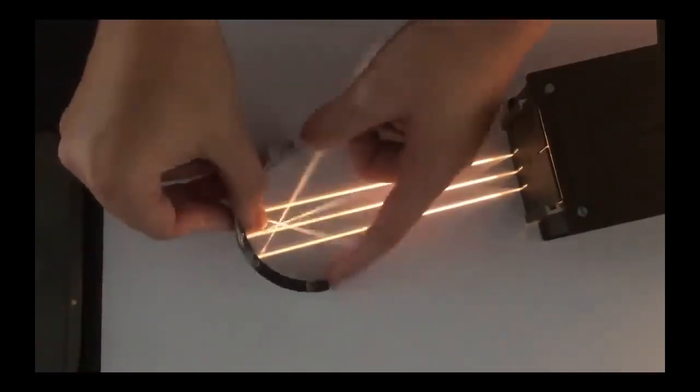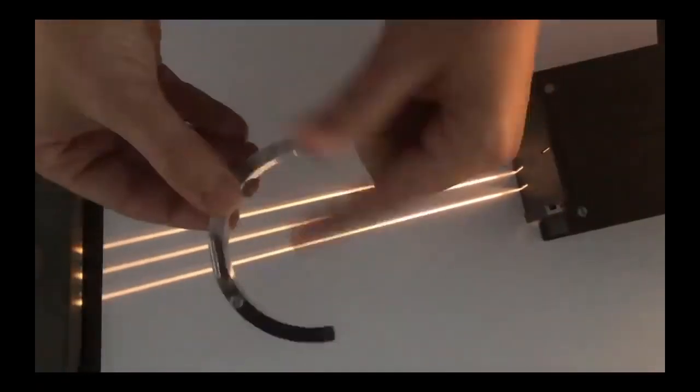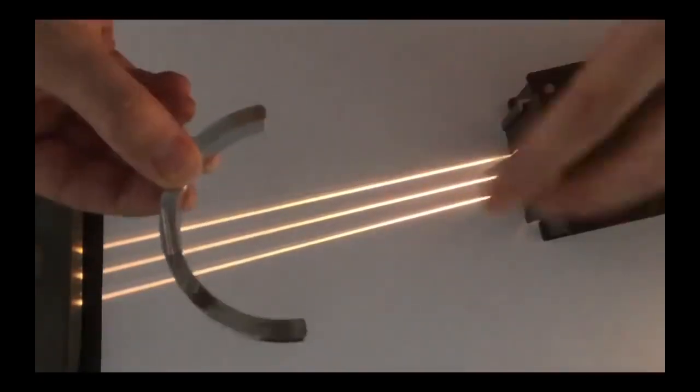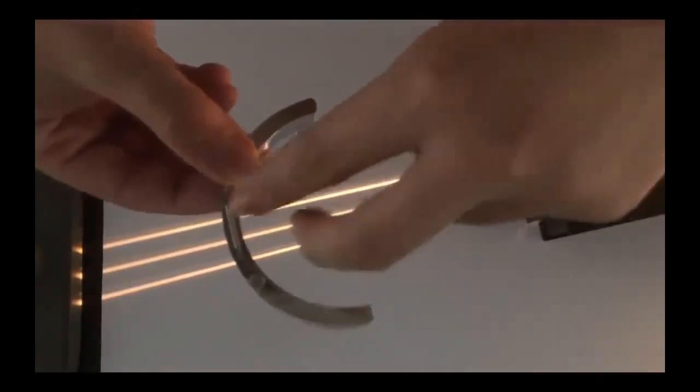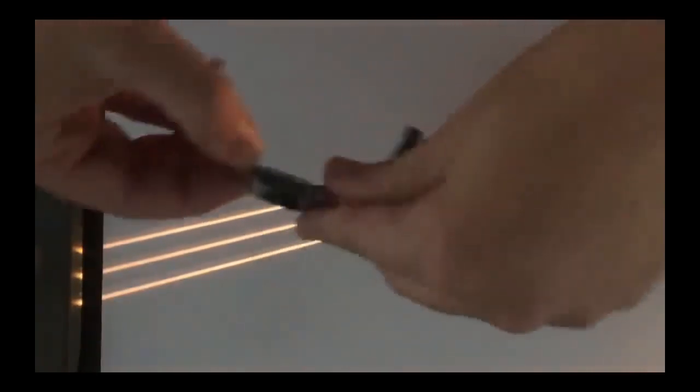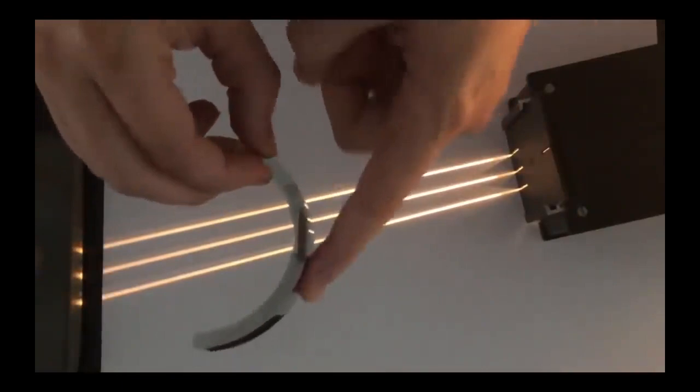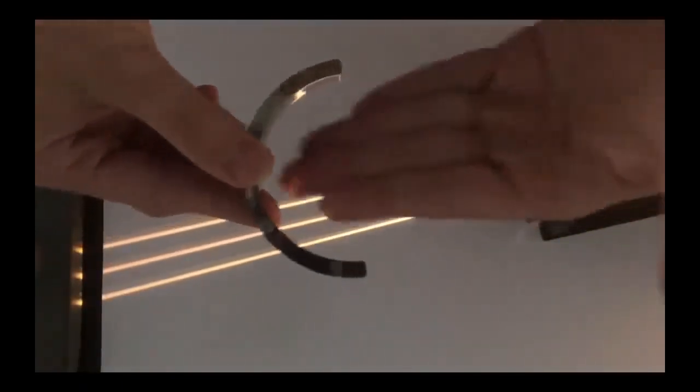If light hits the inside of here, we say this is the concave surface. I remember this as though if you're walking into the cave, it's concave. The other way, if the light was to hit on the outside, this we call convex.